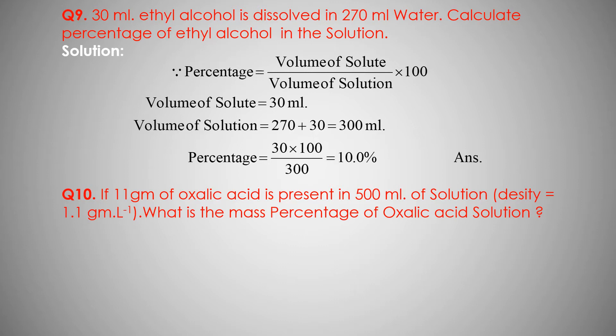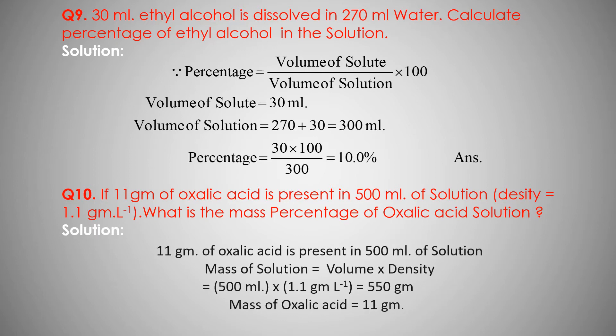Here 11 gram of oxalic acid is present in 500 milliliter of solution. The mass of solute is given, and the volume of the solution is given. We need to convert the volume of solution into mass. Mass of solution equals volume into density.